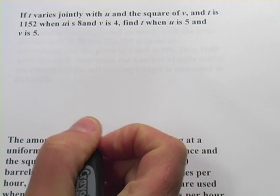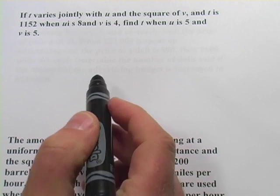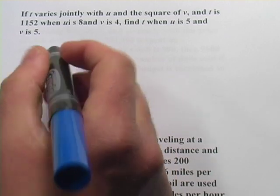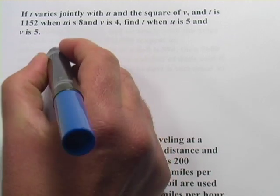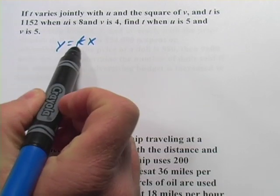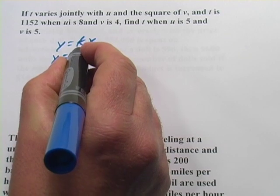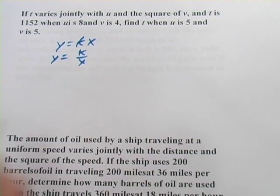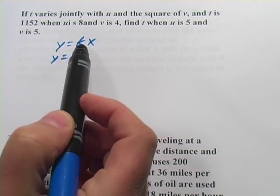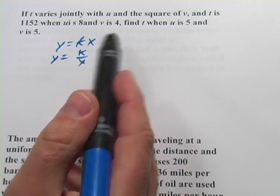These problems have to do with variation: direct variation, inverse variation, and in these we're varying with more than one thing. You're probably used to direct variation where y varies directly with x and we have y equals kx, or inverse variation where y varies inversely with x. In this case, we're going to have y varying either directly or inversely with multiple things, and that's called joint variation.